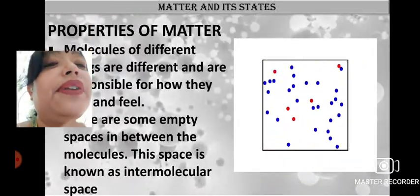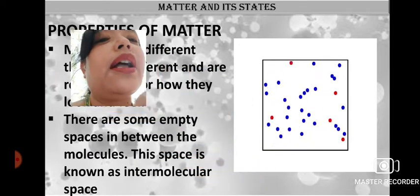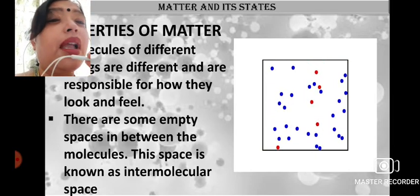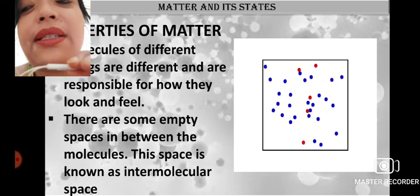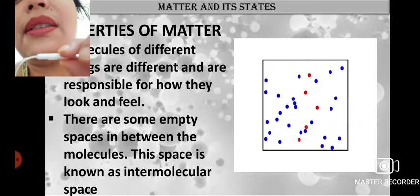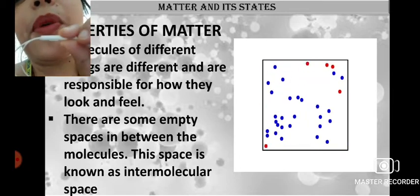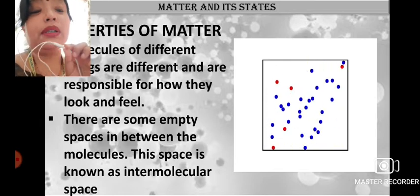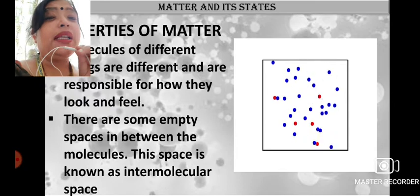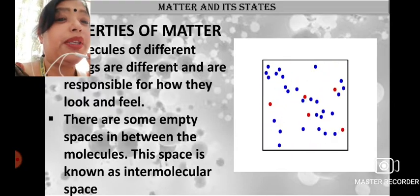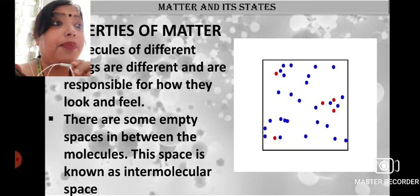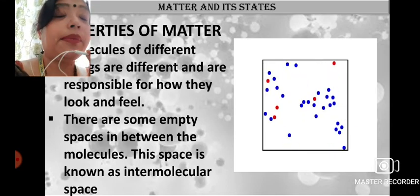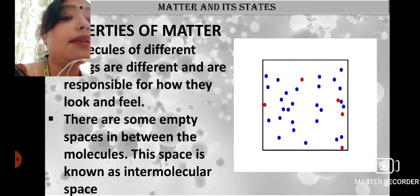The molecules of different substances are different and are responsible for how they look and feel. You can see that the molecules of different substances and different matter are different. Also, there are some empty spaces in between the molecules — these spaces are known as intermolecular spaces.